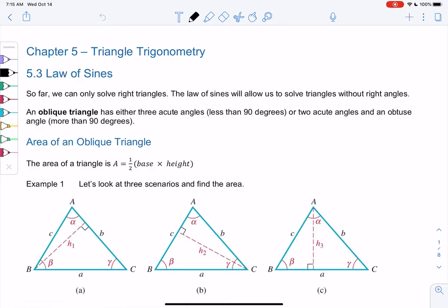Section 5.3, Law of Sines. So far we've only solved right triangles. Right triangles have that nice right angle. So what are we going to do for other triangles? That's where the Law of Sines comes into play. It's going to allow us to solve triangles that don't have right angles.